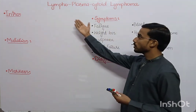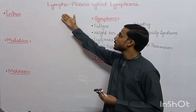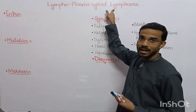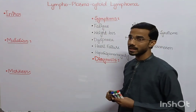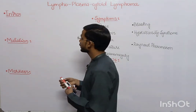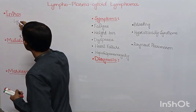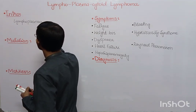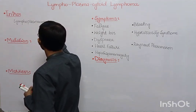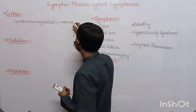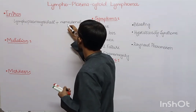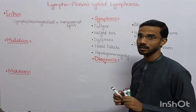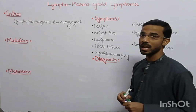Lympho means lymphocyte, plasma means plasma cell. Both cells are present in this lymphoma, which is actually related to the lymph nodes. This disease has lymphoplasmacytoid cells plus monoclonal IgM antibodies — these two factors are present in this lymphoma. This is actually a type of non-Hodgkin lymphoma.